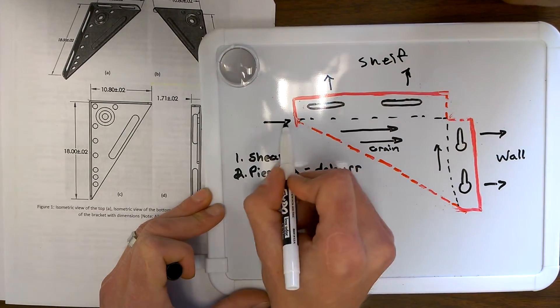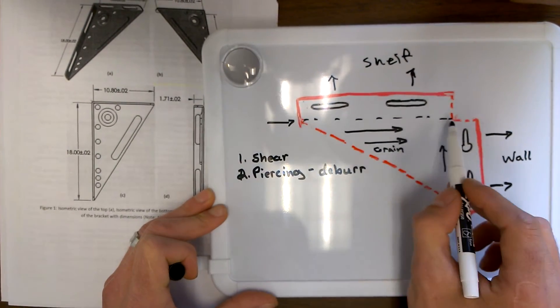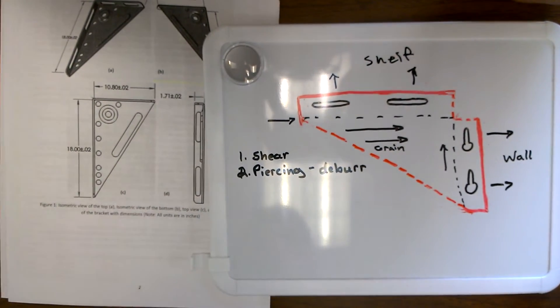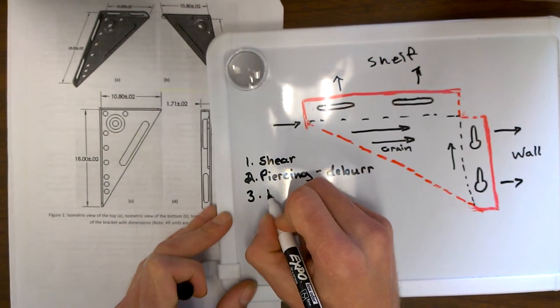Our only concern is our strength of this bend. Hopefully we get no cracking going along the bend parallel with the grain. So our third step is to bend our edges.